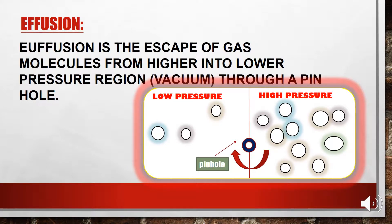What is effusion? As you can see in the diagram, a container has two portions: a low pressure region and a high pressure region. In effusion, gas molecules move one by one through a pinhole from the high pressure region to the low pressure region. By definition, effusion is the escape of gas molecules from the higher to the lower pressure region through a pinhole.